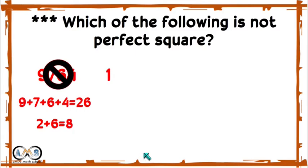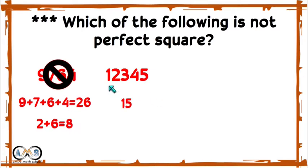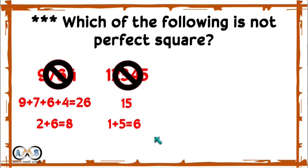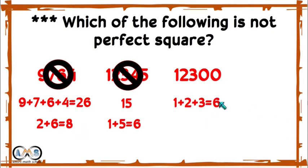Take 12345 — it ends with 5, so it may be a perfect square. The digital sum is 1+2+3+4+5=15, then 1+5=6. The digital root is 6, not 1, 4, 7, or 9, so this is not a perfect square. Similarly, 12300 — the digital sum is also 6, so this is also not a perfect square number.